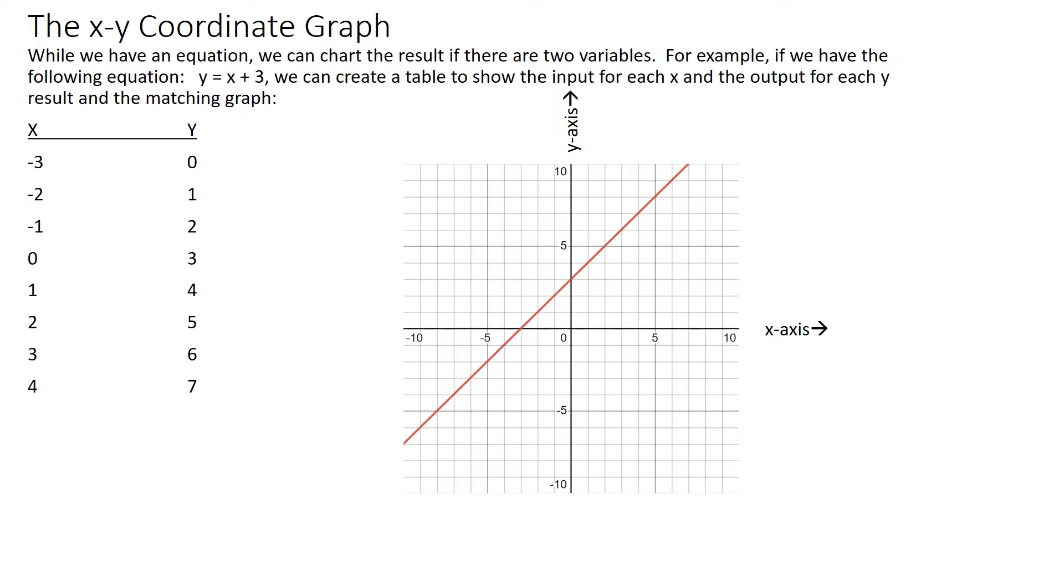And you see every one of these numbers matches a point on the graph. I go to negative 3 and 0, I go to negative 3 on the x axis. And you can see it's on the 0 for the y axis. I go to 2 on the x axis and it matches 2 to the 5 on the y axis. So this equation can be visualized as a graph.